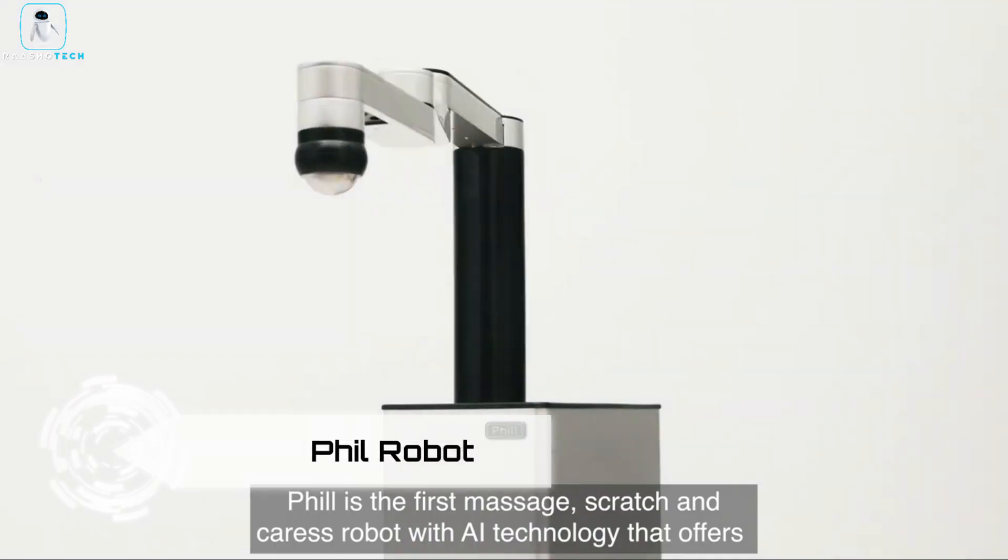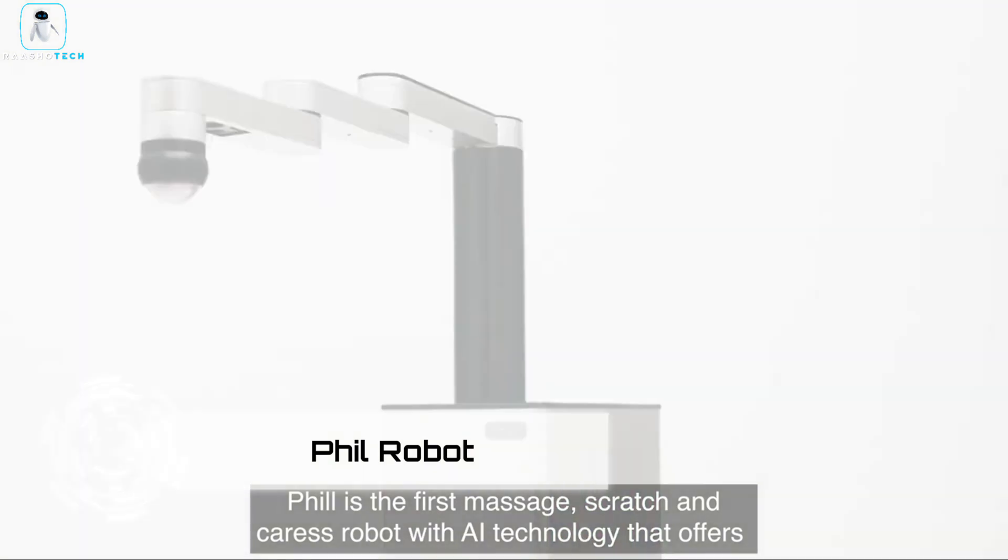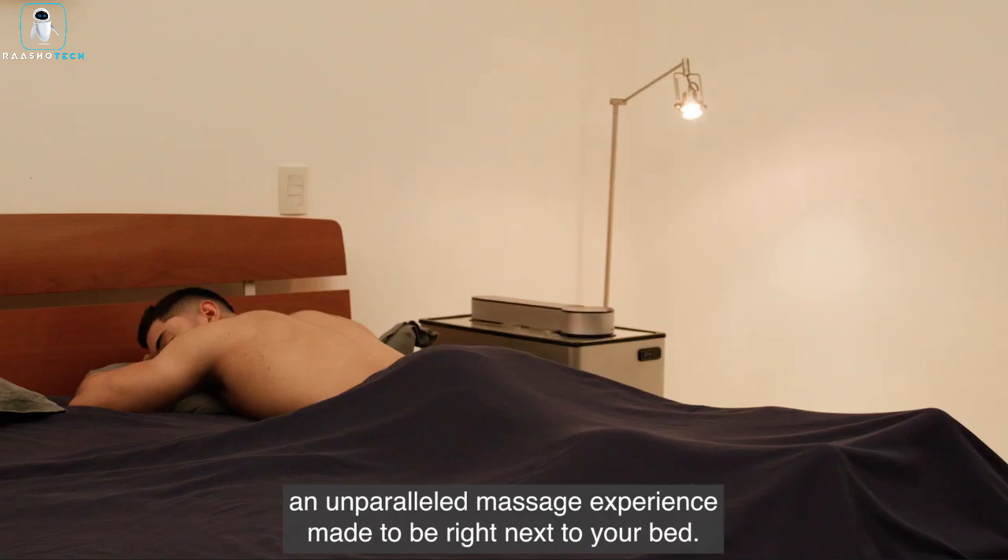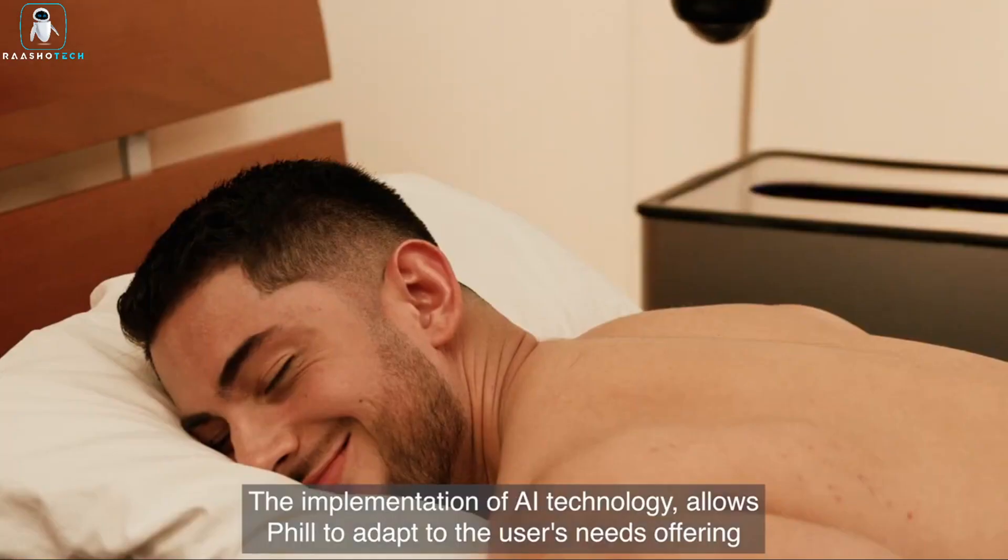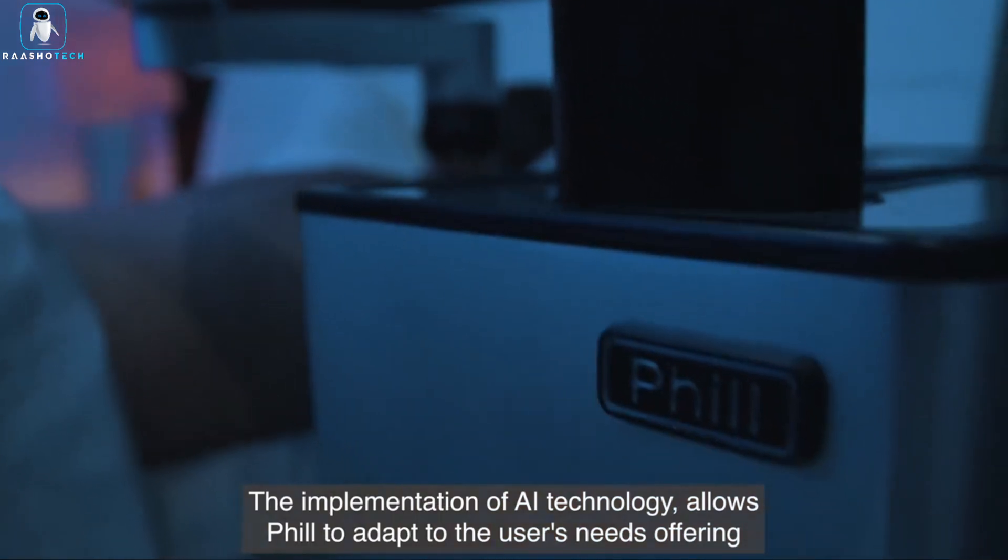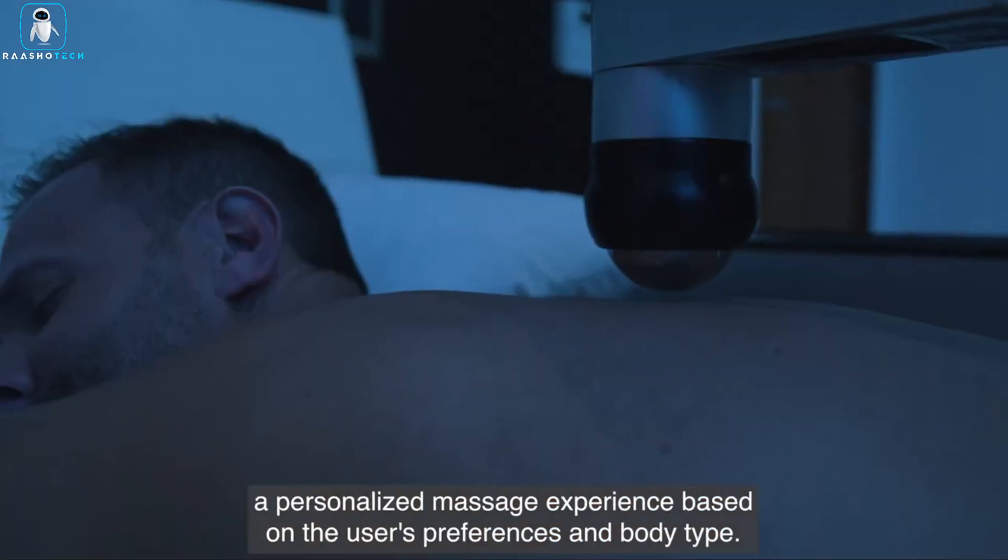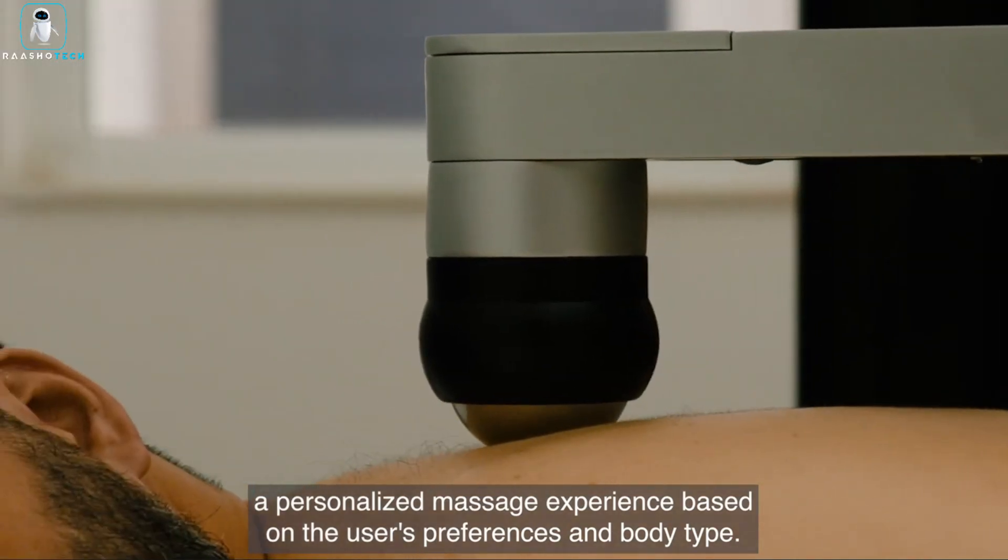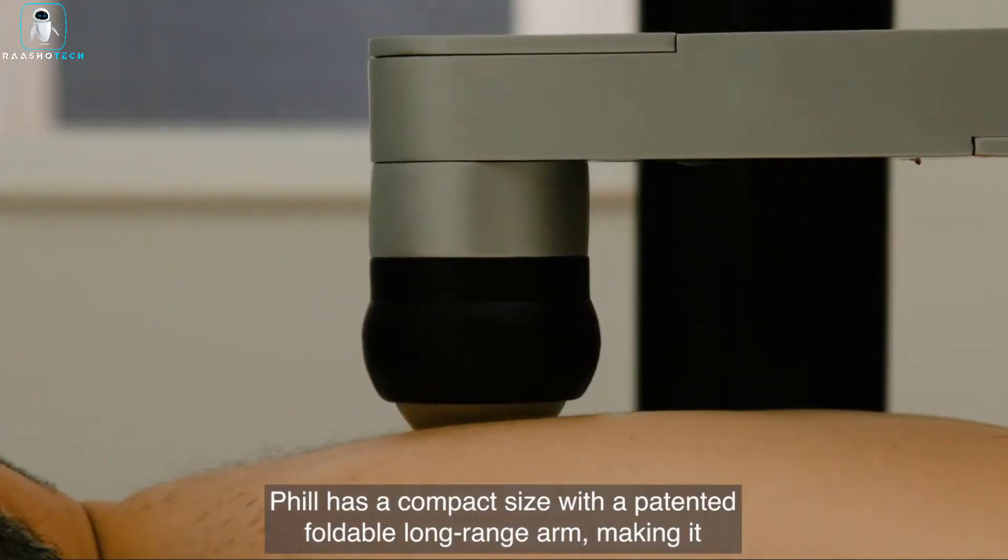Meet Phil, not just your average robot. He's the world's first AI-equipped massage robot. At first glance, he might look like a sleek bedside table. But unfold him, and you're in for a personalized relaxation experience like no other. Picture this: You lie down, turn on Phil, tweak the settings on your smartphone, and let the magic happen.